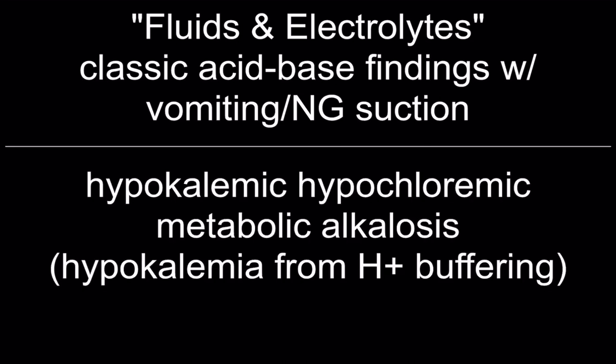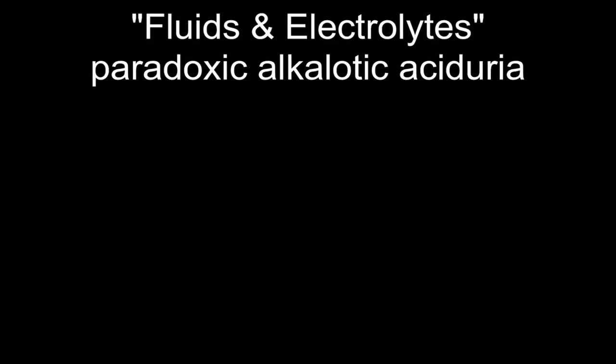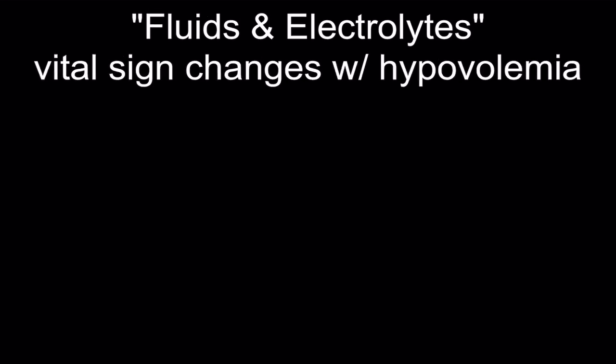Classic acid-base findings with vomiting and NG suction: hypokalemic hypochloremic metabolic alkalosis. Hypokalemia results from hydrogen buffering. Treatment is IV fluids with chloride and potassium replacement. Paradoxic alkalotic aciduria is seen in severe hypokalemic hypochloremic metabolic alkalosis — alkalosis of the serum and acidosis of the urine — because the need for volume overrides the kidneys' need to pH balance.